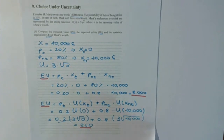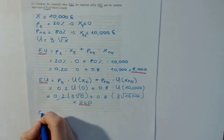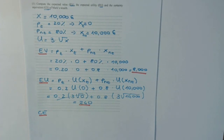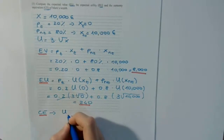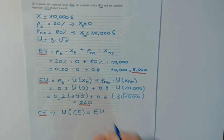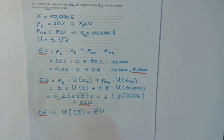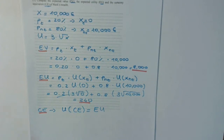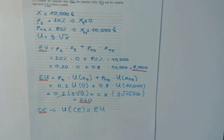Now we compute the certainty equivalent. The certainty equivalent is the amount of money that, if received for sure, makes the individual indifferent with respect to participating in the lottery. By definition, the utility of the certainty equivalent must equal the expected utility, because the certainty equivalent is the sum that makes me indifferent between participating in the lottery and receiving that sum for certain.